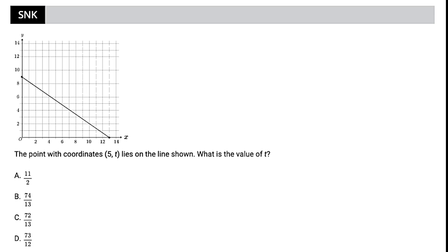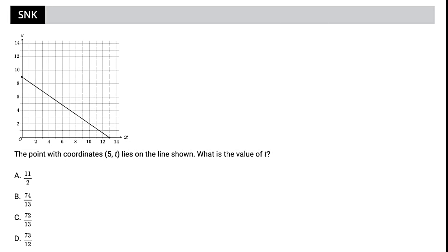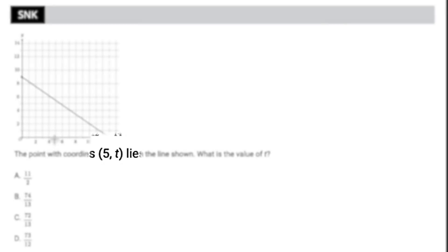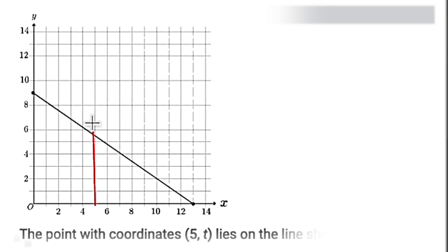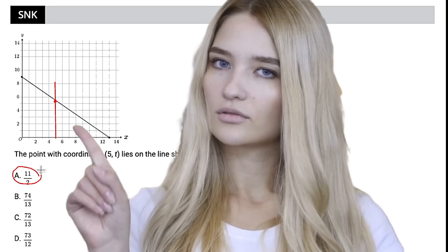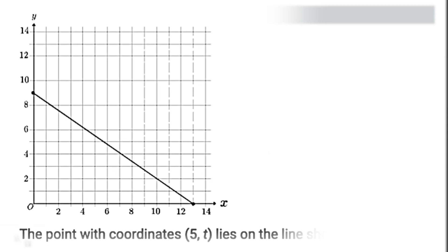Now, the first type of math question I want you to look out for are these sneaky math questions that tend to show up at the beginning of the second module, provided you've gotten to the harder math module. I call them sneaky because it looks pretty simple — it looks like we could just get away with eyeballing this. We know we want to go to where x equals 5, and we can just draw a straight line up, and right there it's looking like it's pretty much just 5.5. So what is 5.5? That would be 11 over 2 — but this is a mistake.